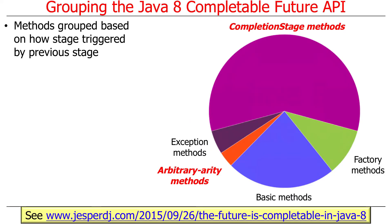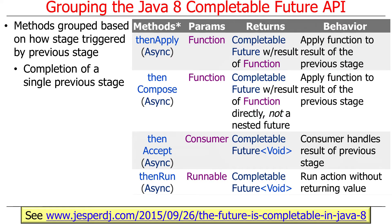Let's talk about these groups of methods. We have completion stage methods and arbitrary arity methods — we'll look at those two groups first. There are about four groups of methods that will be triggered when a single previous stage completes. Those methods are thenApply, thenCompose, thenAccept, and thenRun. I'm not going to go through them in great detail right now — I just want to alert you to the fact that they exist. We will go through them shortly. Those are the methods that get triggered when one stage completes before this stage gets called.